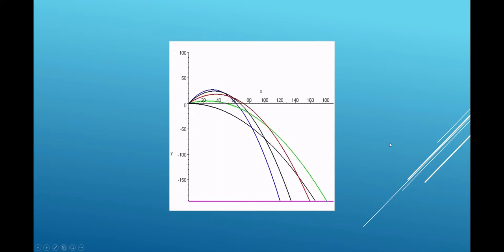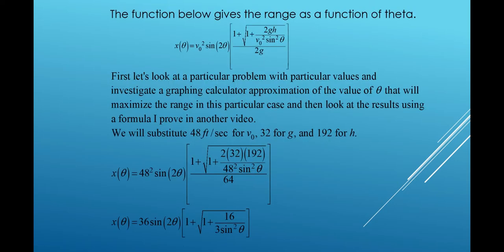Now we'll get to the formulas. This function here, x as a function of theta, gives the actual range. For the problem that I just showed in the animation, I was using 48 feet per second initial speed, 32 gravitational constant dealing with feet and seconds.